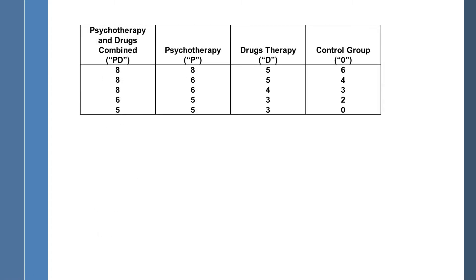Let's work with some actual numbers. For this hypothetical, I have two independent variables: psychotherapy and drugs. One group gets both psychotherapy and drugs, one gets only psychotherapy, one gets only drugs, and the control group gets no treatment — it's a wait list. Higher scores represent improvement, so you can see that the combination of both treatments yields better improvement, and each treatment alone seems to have some improvement, though with drugs it's debatable.